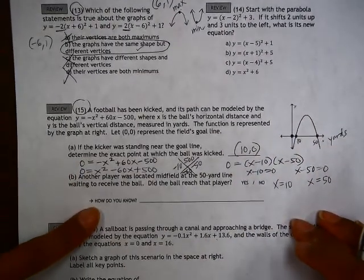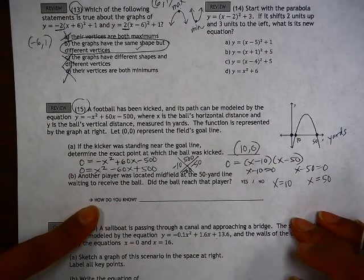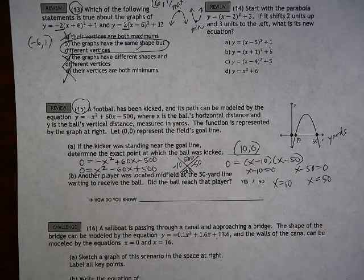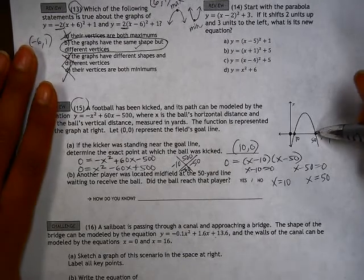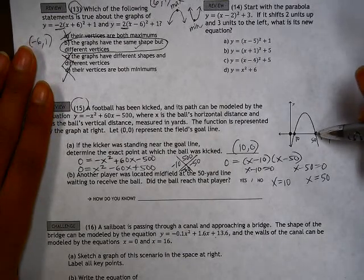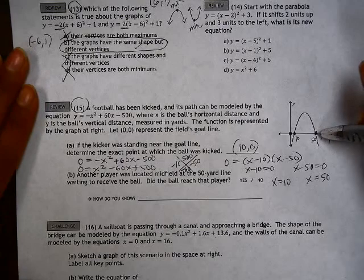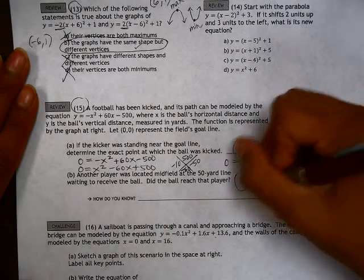Another player was located midfield at the 50-yard line waiting to receive the ball. Did the ball reach that player? So if this other person was standing right here, that means the ball did end up at that player. So yes. How do you know?